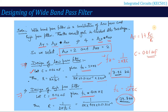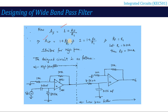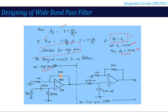Now for the gain: AF = 1 + RF/R1 = 2 for both stages. This gives RF = R1. Let R1 = 10 kΩ, so RF = 10 kΩ for the low pass stage. Similarly, for the high pass stage, R1' = 10 kΩ and RF' = 10 kΩ. The final step is to draw the complete circuit diagram of the band pass filter with all these numerical values.